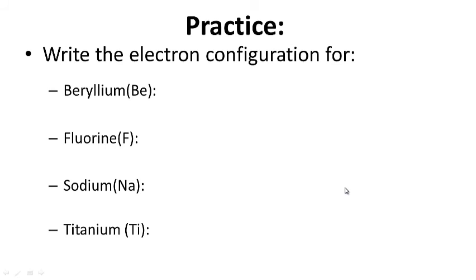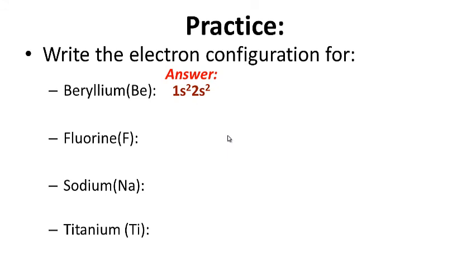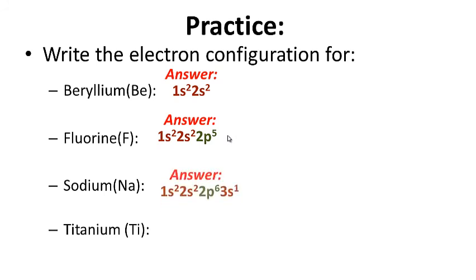For practice, write the electron configuration for the following atoms or elements. Go ahead and pause this while you work; when you're ready to check your work, hit play. Here are the answers: beryllium is 1s² 2s² 2p⁵; sodium is 1s² 2s² 2p⁶ 3s¹.